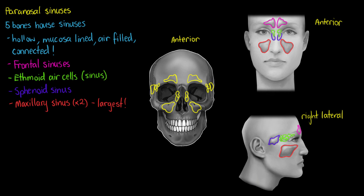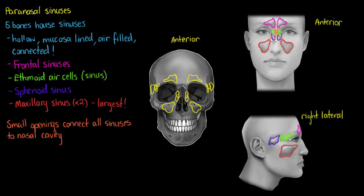Now that we know the name and position of all of our sinuses, let's talk about what their actual function is. There are small openings between all of these sinuses that connect them all to our nasal cavity — that's why most people immediately think of the nose when told about the sinuses. I'm drawing lines now between all of these sinuses to show they're connecting to our nasal cavity. All of these sinuses are connected by small holes and openings so that we can drain them. They produce mucus from that mucosal lining, so we need to be able to drain off that mucus when there's too much.